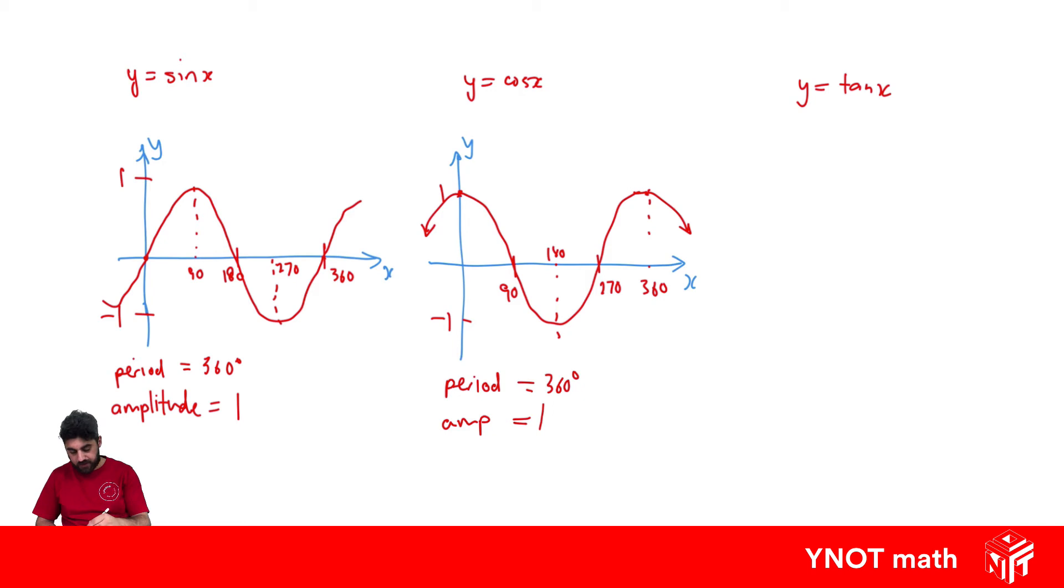What about tan x? Tan x is a little different. It starts at 0 and actually goes up. It has an asymptote at 90 degrees where the graph never touches. We get this cubic-like shape. That's the part that actually repeats. Another asymptote at 270. This is cutting at 180.